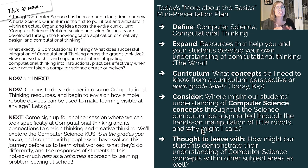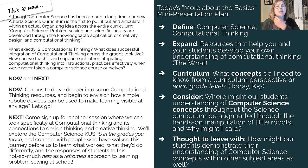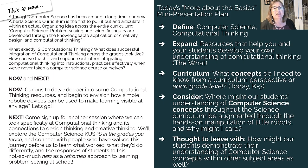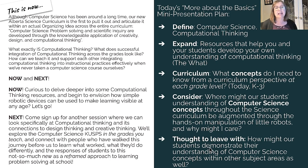Today we're going to look at it in two other ways. We're going to take that idea of computational thinking and review it and then expand upon it. I'd like to share some resources I found helpful in wrapping my head around what computational thinking is all about, so you can explore them at your own leisure. Then we'll look at the curriculum itself and think about what concepts you need to know at each grade level. Today we're going to focus on K to three, consider where computer science concepts might be augmented through the use of little robots, and how students might demonstrate their understanding of computer science concepts not only in science but in other subjects.